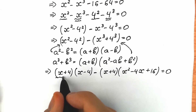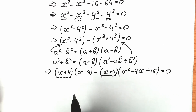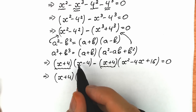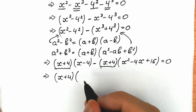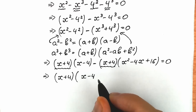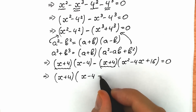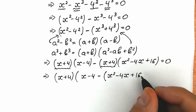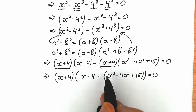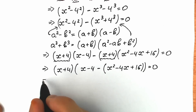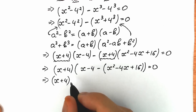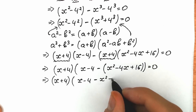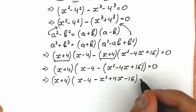We have (x plus 4) in both terms, so we can factor it out. After factoring, inside the second parenthesis we have (x minus 4) minus (x squared minus 4x plus 16). We then distribute the minus sign into that expression, changing all signs. So we get (x plus 4)(x minus 4 minus x squared plus 4x minus 16) equal to zero.